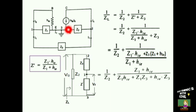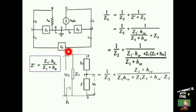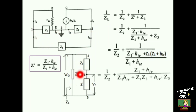Next, we will find the load impedance ZL by looking between terminals 2 and 3. The parallel combination of Z1 and hie — that is, Z-dash — is connected in series with Z3, and this series combination is connected in parallel with Z2. Z2 is connected between terminals 2 and 3, Z3 is connected between terminals 1 and 2, and Z-dash is connected between terminals 1 and 3. The impedances Z3 and Z-dash are connected in series, giving Z3 plus Z-dash, and this series combination is connected in parallel with Z2.